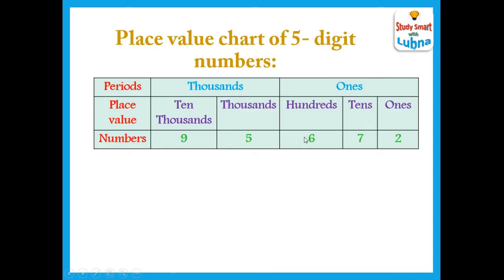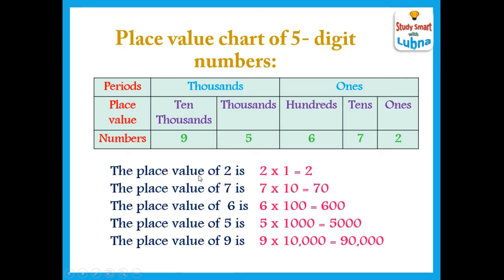Each digit of the number has a different place value. The place value of 2 is ones, 7 is tens, 6 is hundreds, 5 is thousands and 9 is ten thousands. When writing the number in standard form, we put a comma after the ones period. The place value of 2 is 2×1=2, of 7 is 7×10=70, of 6 is 6×100=600, of 5 is 5×1,000=5,000, and of 9 is 9×10,000=90,000.